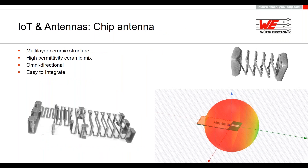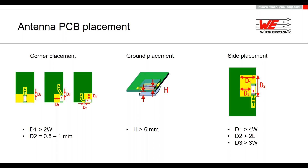A chip antenna is basically layers of metallization printed on a ceramic substrate. The layers are put together to form a helical-like pattern in most cases, giving an almost omnidirectional radiation pattern and a very good size-to-performance ratio. A specially designed dielectric material is used as the substrate, with a dielectric constant typically between 6 and 10. Placing the antenna on the PCB is tricky — the antenna must be placed on a ground-free area, away from other circuit components, since changes in the near field affect antenna impedance and can lead to performance degradation.